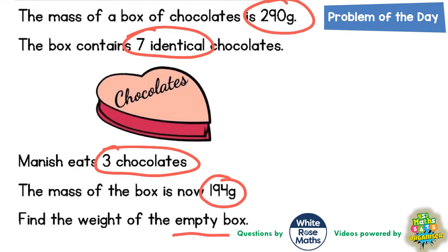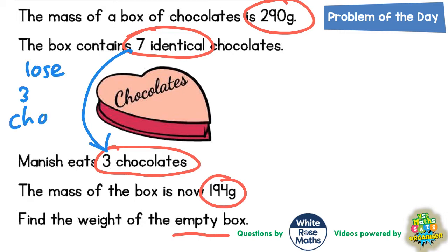Well, how on earth are we going to do this? The obvious thing to do is to look at how the box is changing when the chocolates are eaten. If we start with seven chocolates and he is eating three, we are losing three chocolates out of the box. We also need to compare what mass we are losing, because if we are losing three chocolates and we work out what mass we are losing, we know how much those three chocolates must weigh all together.